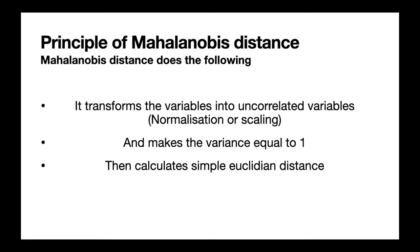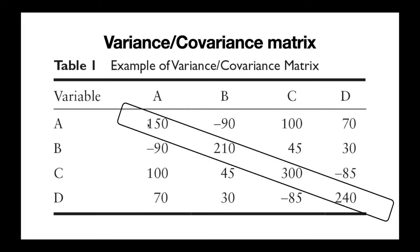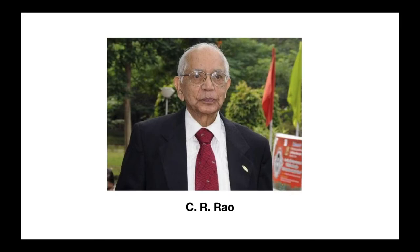It makes the variance equal to 1 and then calculates simple Euclidean distances. Here is an example of a variance-covariance matrix: diagonal values are variances and off-diagonal values are covariances. For instance, 150 is the variance of A, 210 is the variance of B, 300 is the variance of C, and -90 is the covariance between A and B. We need to calculate such a variance-covariance matrix in our data analysis.